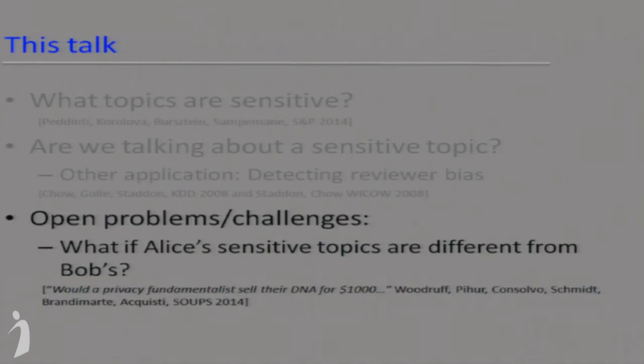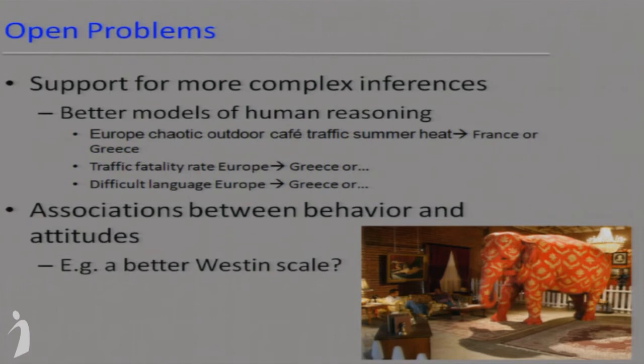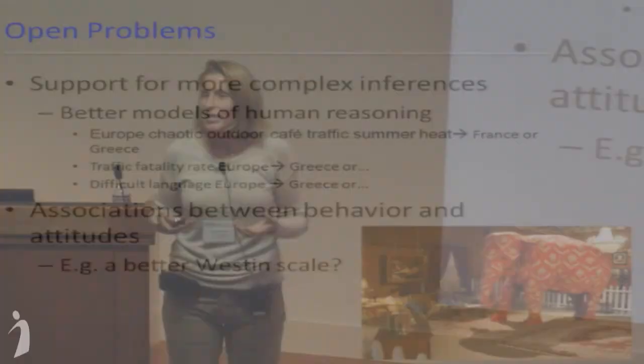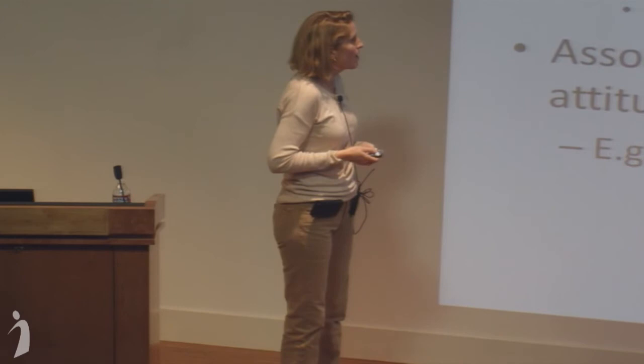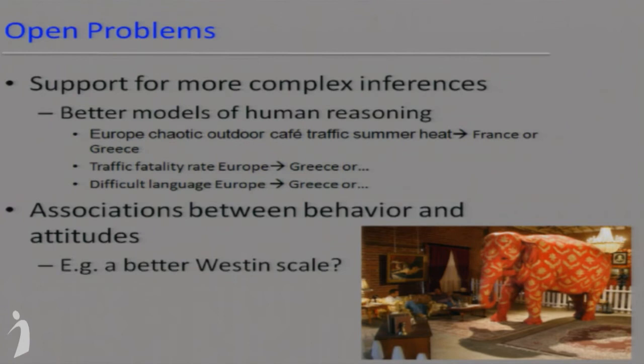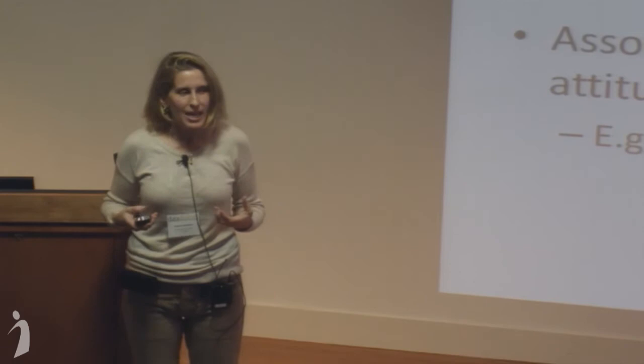Moving to open problems. The specific algorithms have lots of room for improvement — in the inference work we're trying to model human reasoning but cutting corners, not capturing the full complexity of how humans reason. But the bigger open problem — the elephant in the room with respect to data mining and privacy — is figuring out how to associate attitudes: what people say about their privacy concerns and expectations, with what they actually do behaviorally.